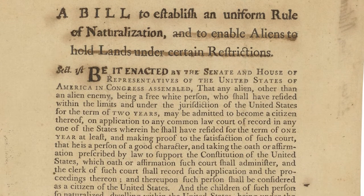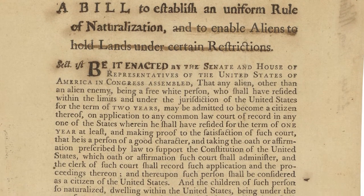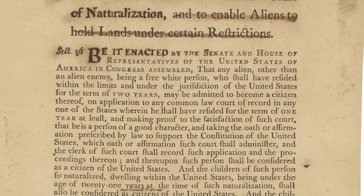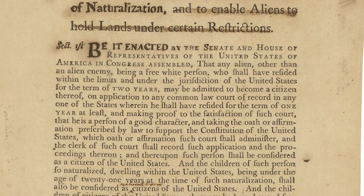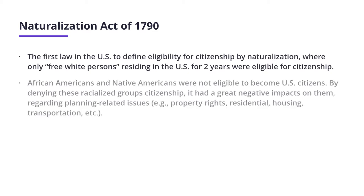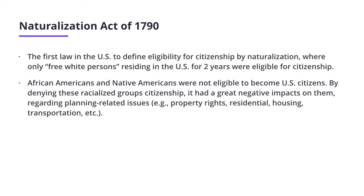In 1790, Congress passed the Naturalization Act of 1790. This is the first law in the U.S. to define the eligibility of citizenship by naturalization, where free whites were considered citizens after two years of residence in the United States. This means that African Americans, Native Americans, and other racialized groups that were here at the time were excluded from citizenship, denying them the opportunities afforded to citizens during this time period.